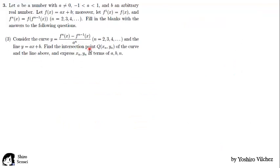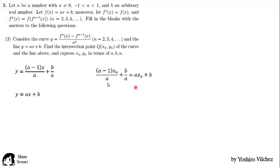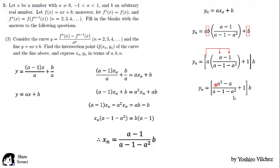Next question: consider the curve y equal to fn of x minus fn minus 1 of x over a to the n, for n equal to 2, 3, 4 and so on, and the line y equal to ax plus b. Find the intersection point Q of coordinates (xn, yn) of the curve and the line, and express xn and yn in terms of a, b and n. We already have the curve function: (a minus 1)x plus b over a. We equalize both functions and find xn. Multiplying all terms by a and grouping, we get xn equal to (a minus 1) over (a minus 1 minus a squared) times b. Replacing to find yn and simplifying, we get yn equal to minus b over (a minus 1 minus a squared).